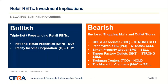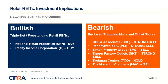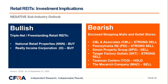Wrapping up retail REITs: we're obviously very bearish on enclosed shopping malls and outlet stores. Simon was a bit of a non-consensus call when we went negative — they have only outlet stores way outside city centers, so you can't repurpose the land into offices or residential as you can with other malls. On the other end of the spectrum, we are more positive on the resilient types: triple net, freestanding, and the biggest names there are National Retail Properties and Realty Income Corporation.